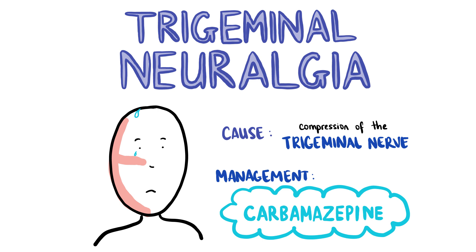Trigeminal neuralgia is characterised by a unilateral facial pain described as an electrical or shooting pain in the territory of the trigeminal nerve, usually around the cheek or jaw. The pain worsens on irritation of the trigeminal nerve, for example on closing the jaw, exposure to cold air or touch. The patient may also complain of autonomic symptoms. Attacks last from a few seconds to several minutes and there can be several attacks daily. The patient may go into remission for long periods of time before symptoms recur, and pain-free periods tend to get shorter gradually. Trigeminal neuralgia is caused by compression of the trigeminal nerve, which can be due to an intracranial mass such as a tumour, MS, aneurysms, stroke, trauma, or it can be completely iatrogenic.